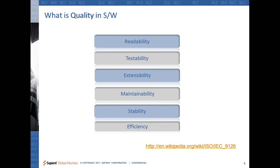I have listed here six or seven different attributes of good code. It has to be efficient, stable, maintainable, extensible, testable, and readable. I have provided a link here which references a standard for code quality attributes — it's called ISO 9126. You can go and check there for the full definition of code quality and what software quality is all about.